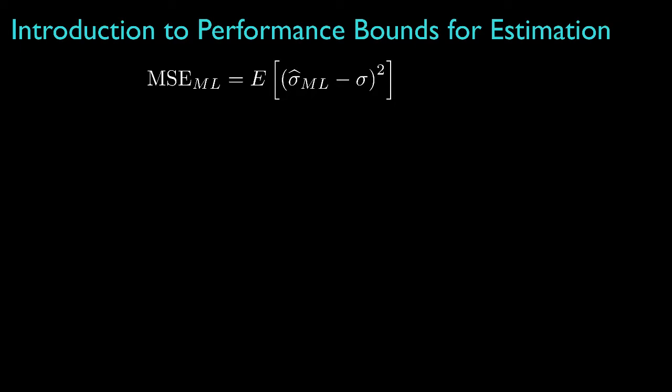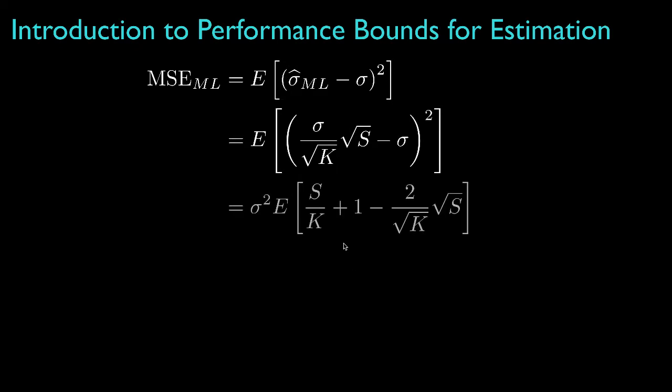To evaluate the performance for this estimator, we might compute the mean square estimation error, which, when we substitute the form for the estimator, results in an expression that involves the expected value for s and the expected value for the square root of s.